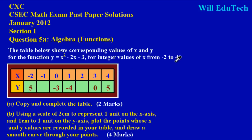The X values represent the domain of the graph — meaning how wide the graph is going to spread. After I've drawn the curve I'll come back to show you that relationship. It's nothing technical, it's pretty easy.